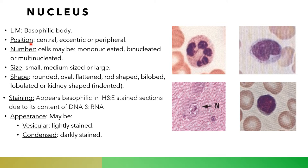This is called basophilic, and the basic stain is hematoxylin, which appears blue in color. The position either appears central, eccentric, or peripheral. The number is usually one, but may be binucleated or multinucleated in cells such as skeletal muscle. The size is variable — it may be small, large, or medium.